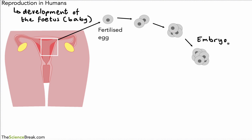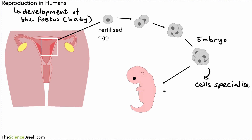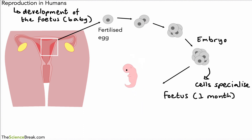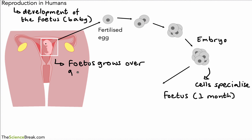An embryo is a little ball of cells with no specialized cells at this point. After this, the cells specialize, meaning they become the kinds of cells needed for the different parts of the body. Here is a fetus — this is a fetus that's about one month old. It will continue to develop in the womb over a period of about nine months. Note the scale is not quite right in the diagram.